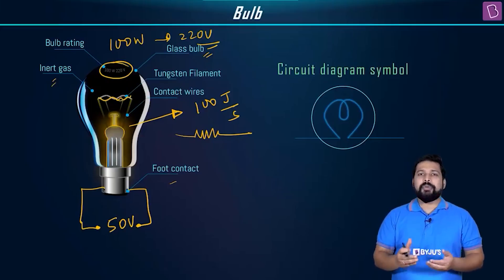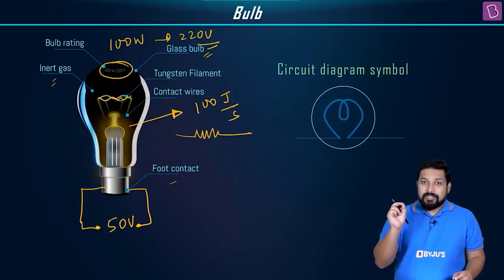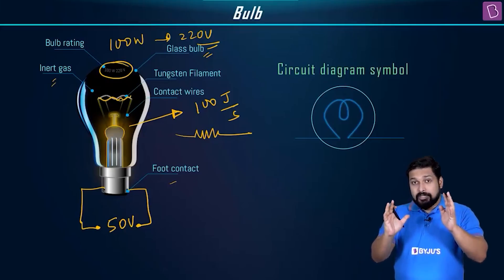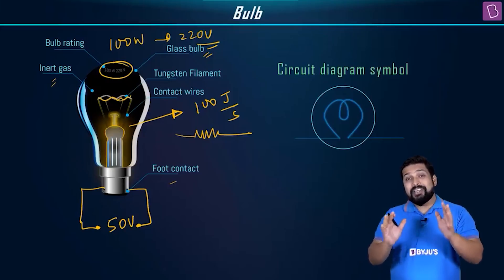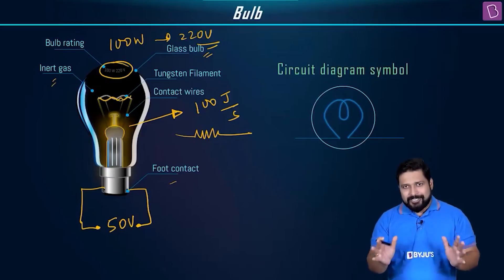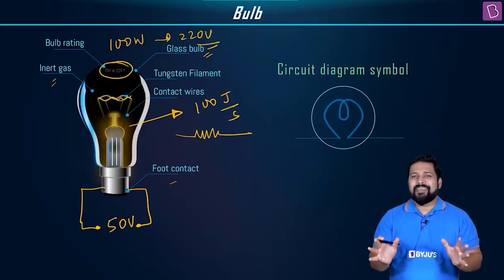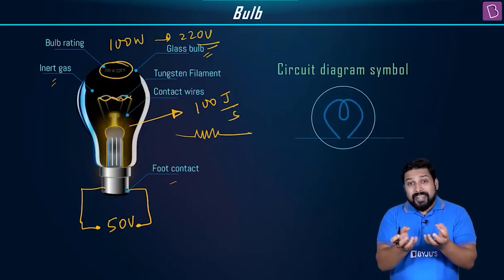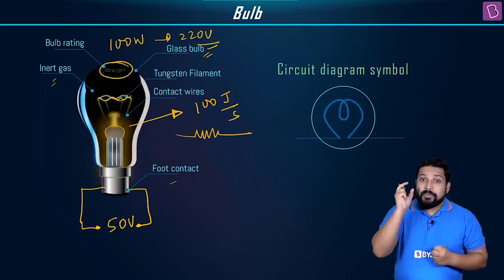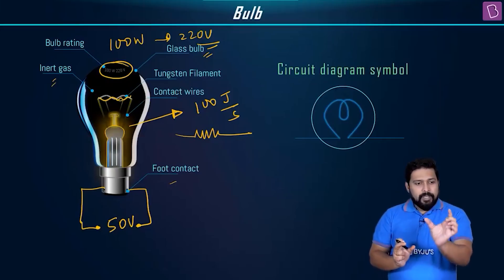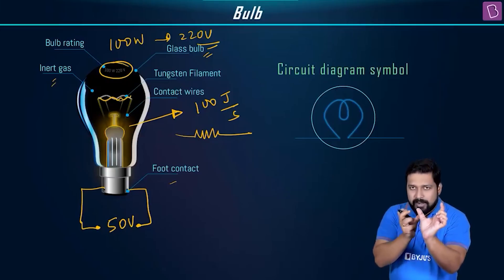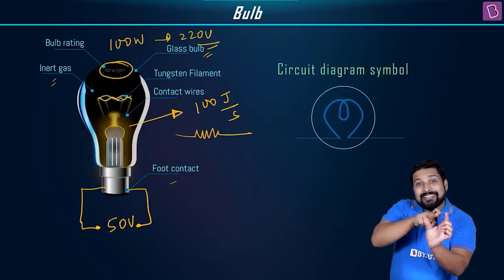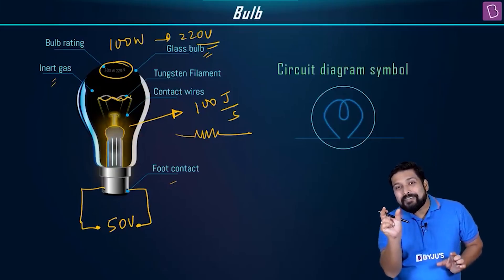In India, bulbs are rated at 220 volts because we work on a 220-volt supply. When a bulb is rated as 100 watts at 220 volts, it means it will dissipate 100 watts of power — or 100 joules per second — given the condition that it is connected across a potential difference of 220 volts.